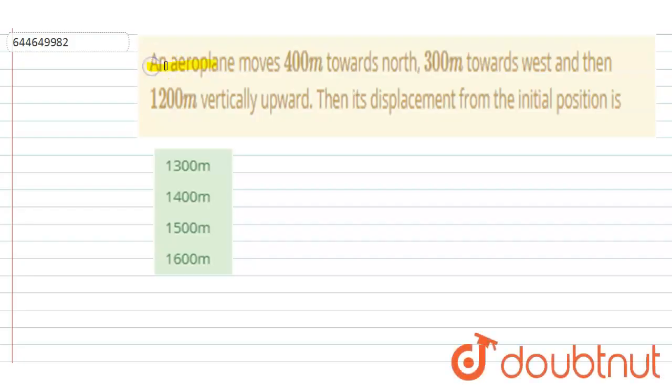Hello everyone, an aeroplane moves 400 meters toward north, 300 meters toward west, then 1200 meters vertically upward. Its displacement from the initial position is?